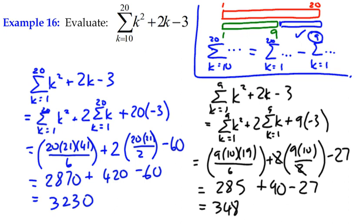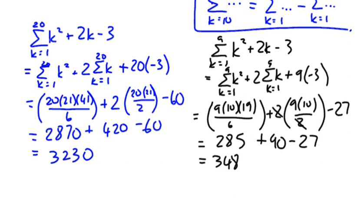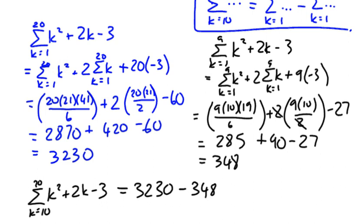Okay, so going right back up to the diagram at the top, that's basically 3,230. The value from 1 to 9 is 348, so we're looking for the difference between those two. So we can say that sigma k squared plus 2k minus 3 from k equals 10 to 20 is 3,230 minus 348,